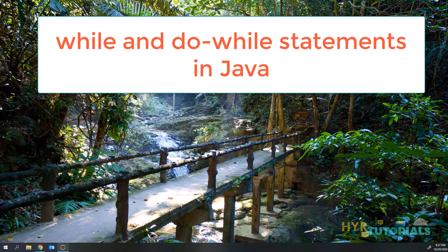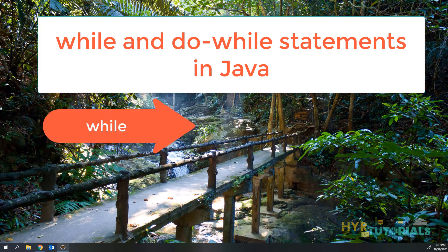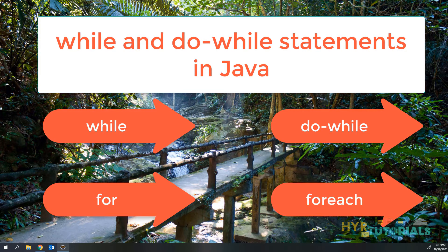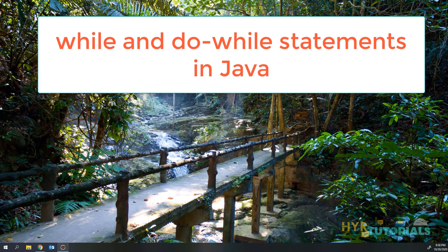Generally, we have 4 types of looping statements in Java. Those are while, do-while, for, and for-each. Out of these 4 statements, we will look at the while and do-while statements in this video. And in my next video, I will try to cover for and for-each statements.